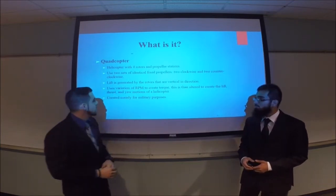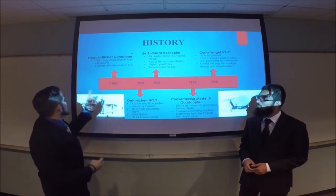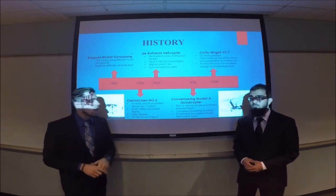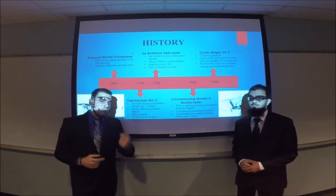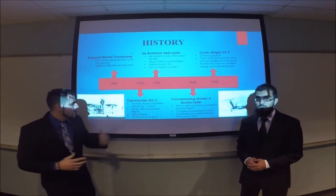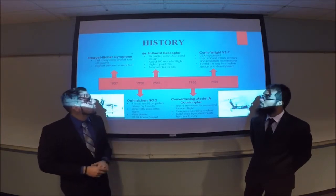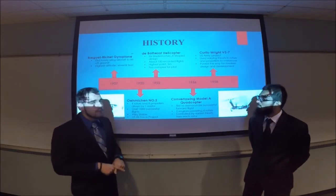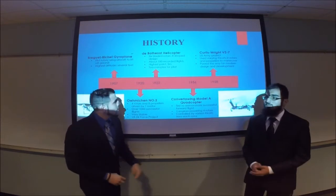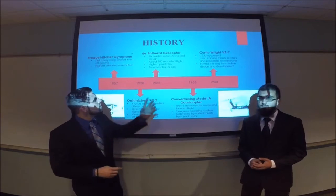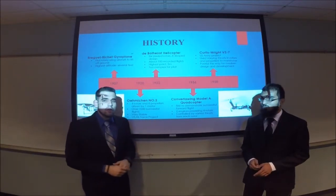These quadcopters were created mainly for military purposes. The first quadcopter created was the Bréguet-Richet Gyroplane, the first rotary-wing aircraft to lift off the ground, though it only lifted several feet. The second was the Oehmichen Number Two, which had four rotors and eight propellers driven by one motor, over a thousand successful flights, and was used mainly by the Air Force. The third was the de Bothezat helicopter, which had six-bladed rotors and an X-shaped design. It had about a hundred recorded flights and reached a maximum elevation of five meters, but was very complex because the pilot had to control each rotor individually.